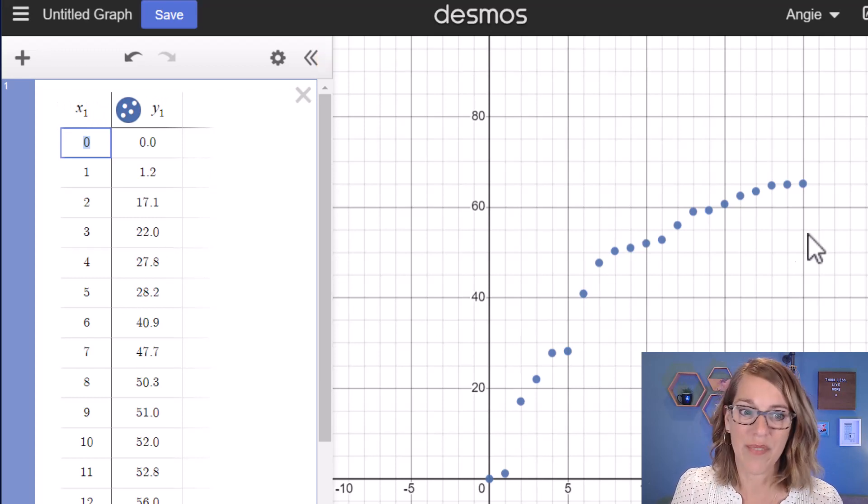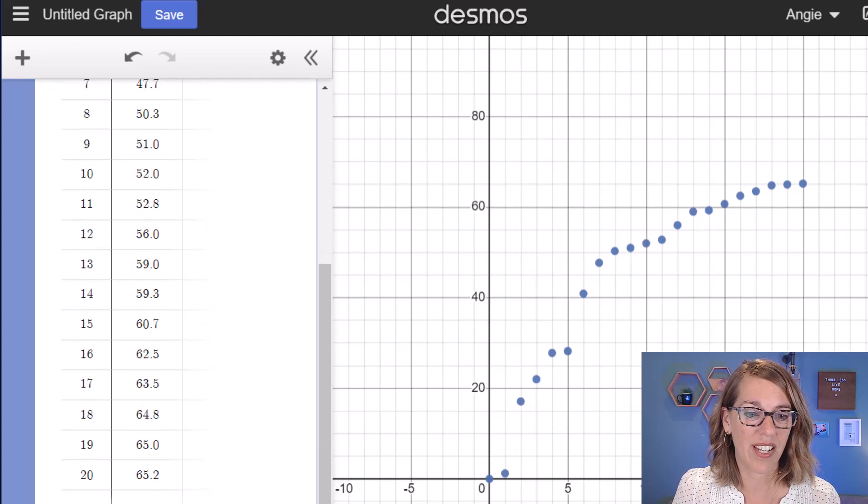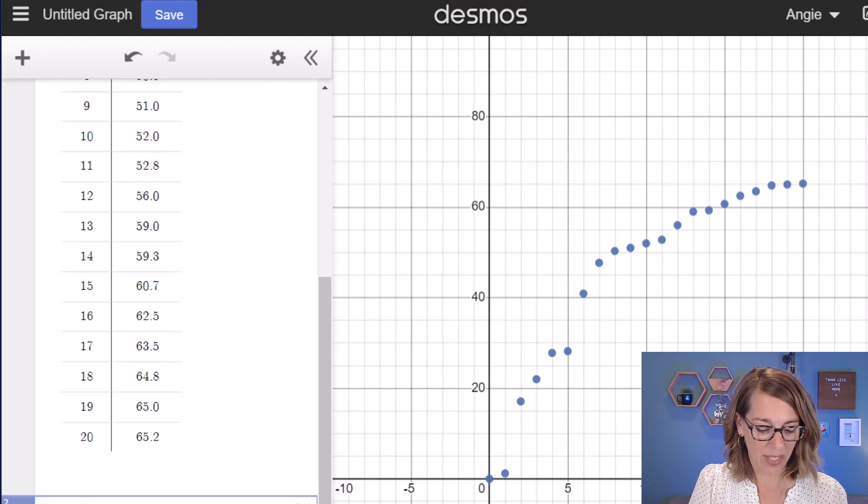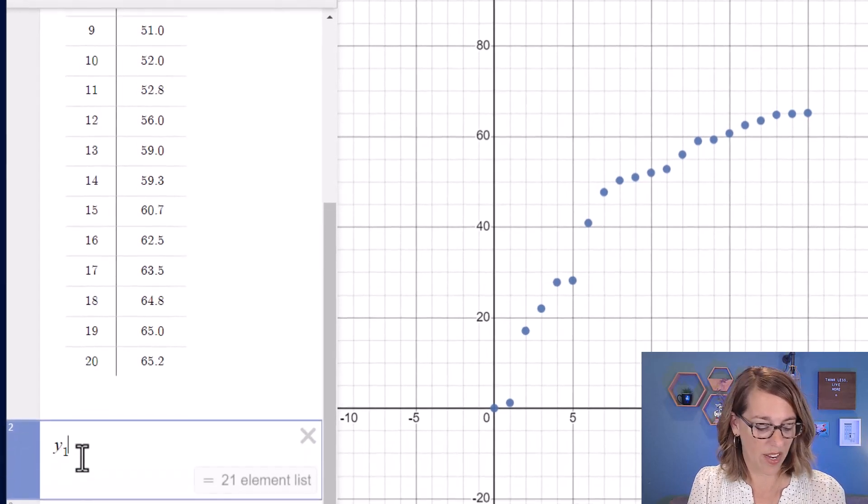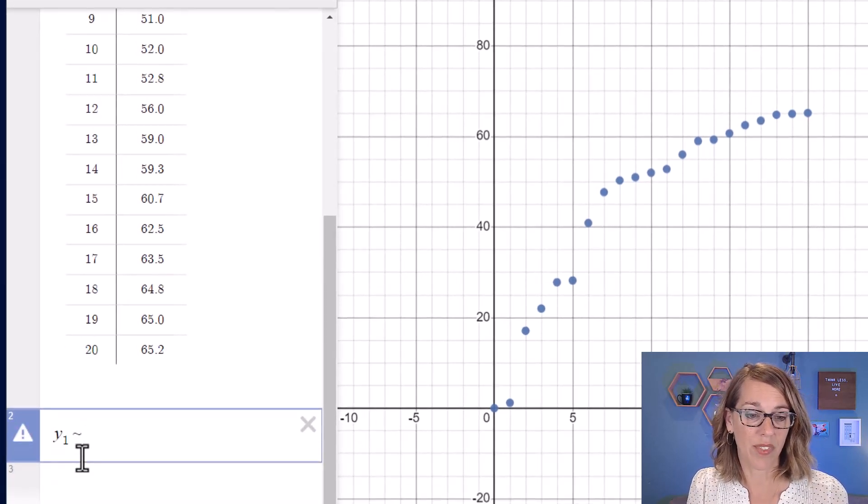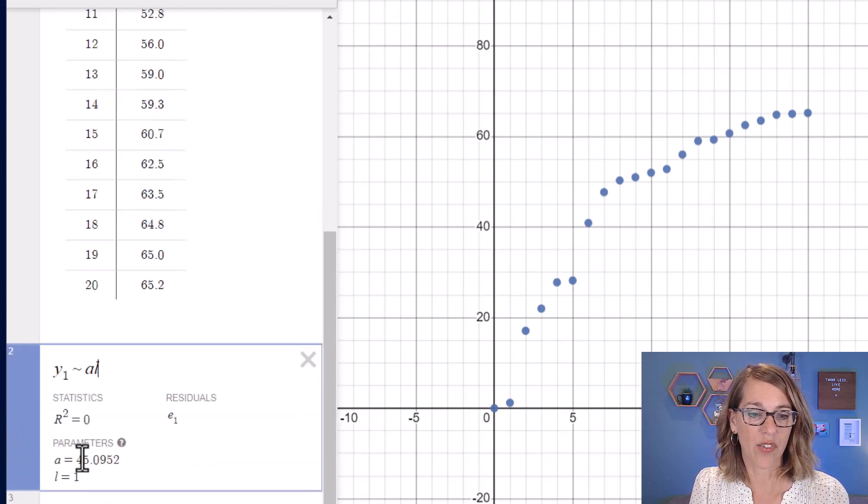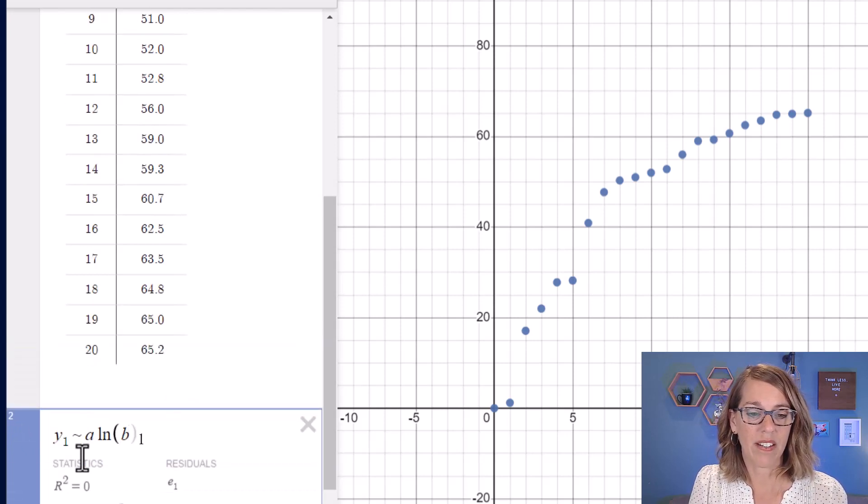This one looks logarithmic. So as I put this one into an empty cell, again x1, y1, very similar. I'm going to go y1 and then tilde. This looks like a logarithm. So I'm going to go a natural log bx.